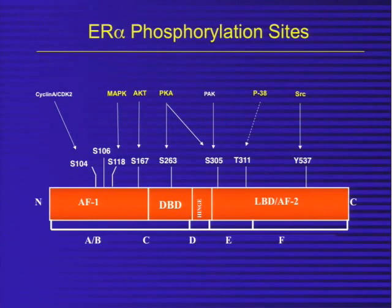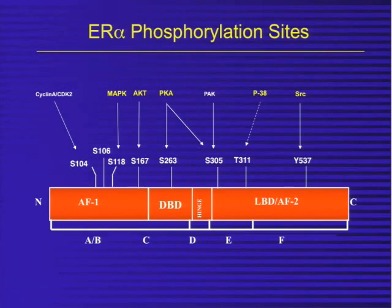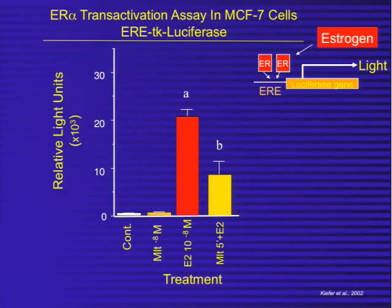I'm a steroid receptor biologist as well as a melatonin biologist by training. We know that all steroid receptors, including estrogen receptor alpha, are phosphoproteins. Various signaling pathways — which I just showed you melatonin can modulate — have very specific phosphorylation sites on the estrogen receptor alpha and can modulate its activity. This is the primary receptor that estrogen binds to and activates to stimulate proliferation of breast epithelium and the growth of a large percentage of human breast cancer cells. So we asked: does melatonin modulate the activity of estrogen receptor alpha?